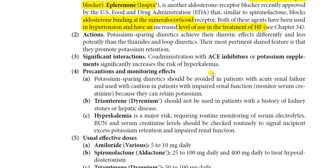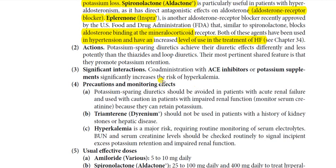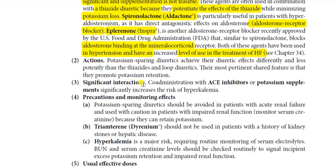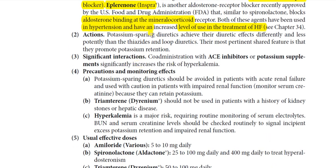In heart failure cases, when sodium and potassium loss is increased, the patient may develop bradycardia; the heart is unable to contract properly, its rhythm is disturbed, and the condition further deteriorates. This is actually the cardiovascular adverse effect of potassium loss. The potassium-sparing diuretics achieve their diuretic effect differently and less potently than thiazide and loop diuretics — they are considered weak diuretics by comparison.